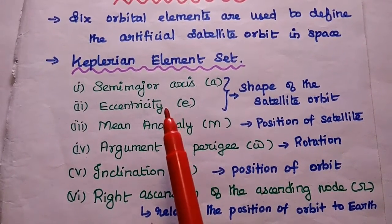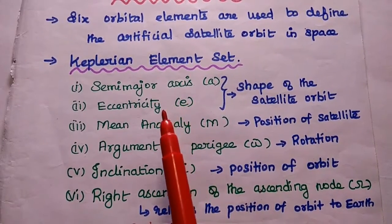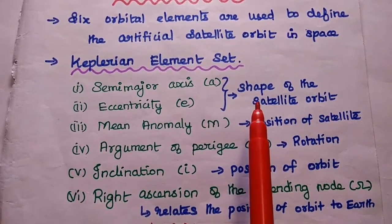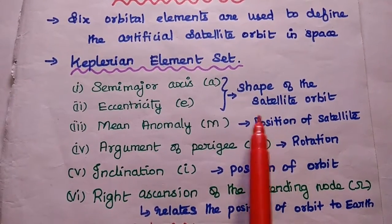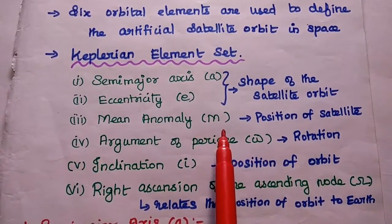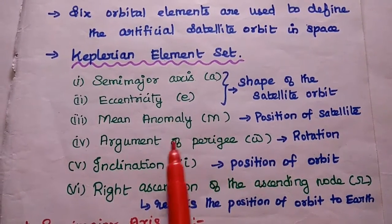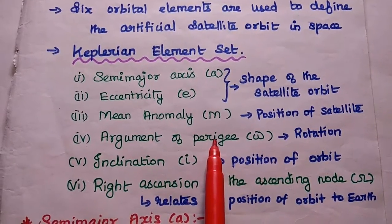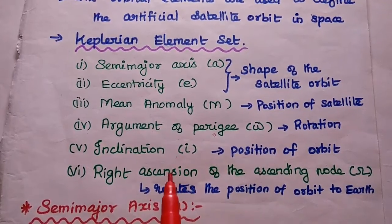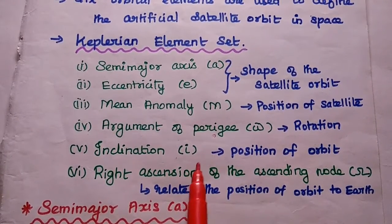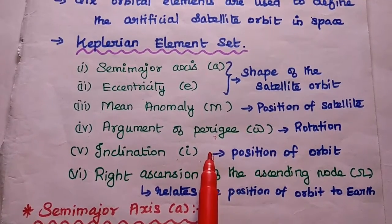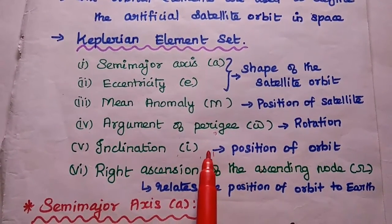The first two elements — semi-major axis and eccentricity — are used to represent the shape of the satellite orbit. Mean anomaly is used to represent the position of the satellite in space. Argument of perigee is used to represent the rotation of the satellite. Inclination and right ascension of the ascending node are used to represent the position of the orbit with respect to Earth.